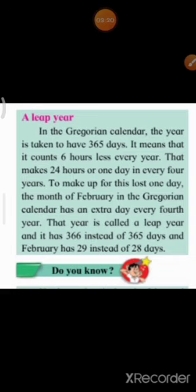We had seen about a year. The earth revolves around the sun and it rotates around itself. The period of time that the earth takes to complete one revolution around the sun is called one year. Up till here, we had completed in the last lecture. Now we will move on further in the lesson.